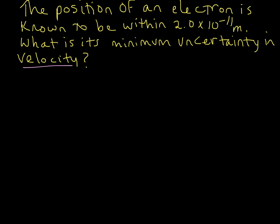Let's go ahead and write down the equation for the Heisenberg uncertainty principle. The uncertainty in X multiplied by the uncertainty in momentum is always greater than or equal to Planck's constant divided by 4π. So that's what we're working with.